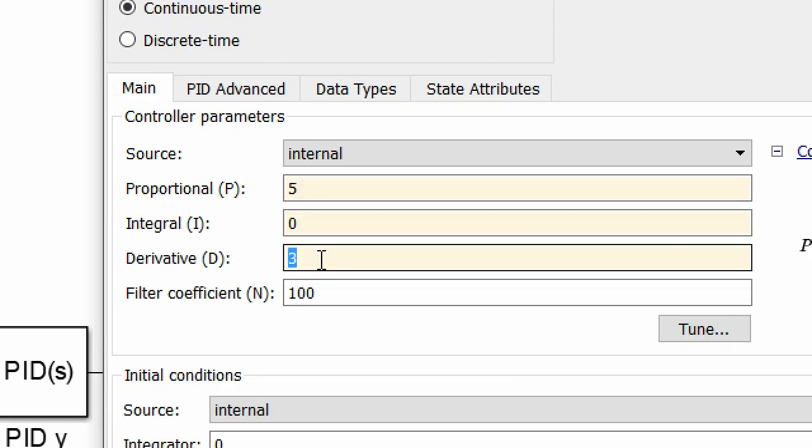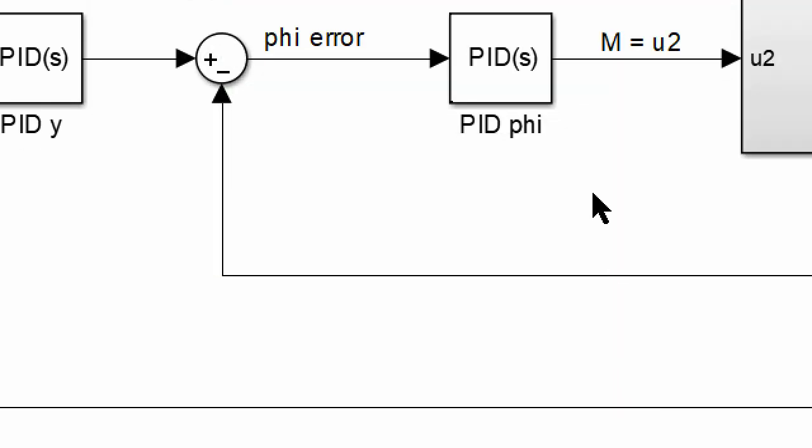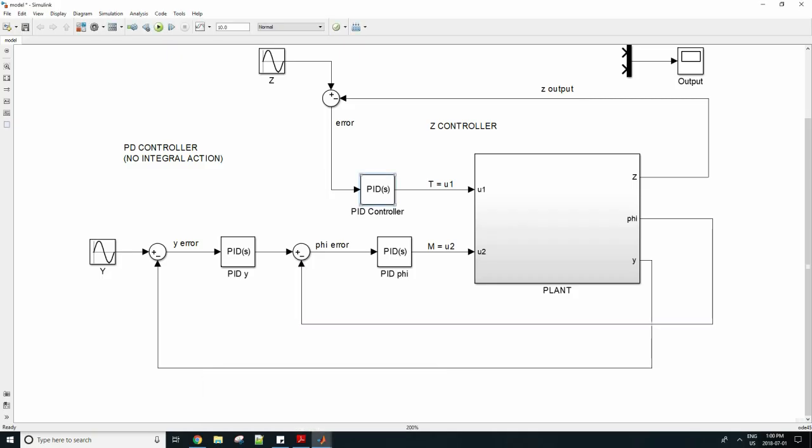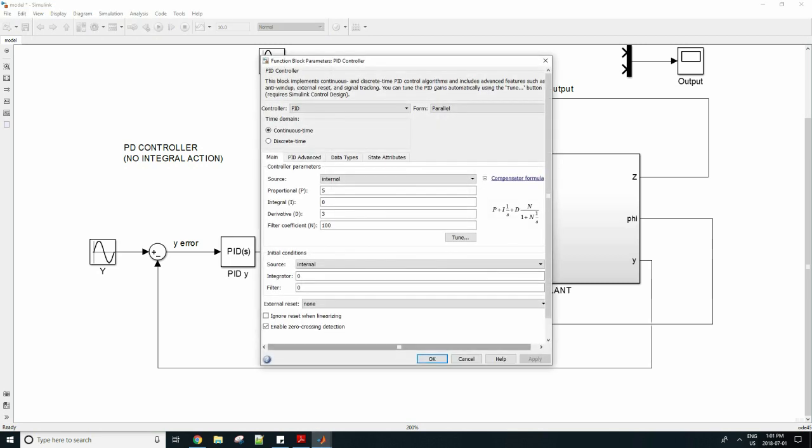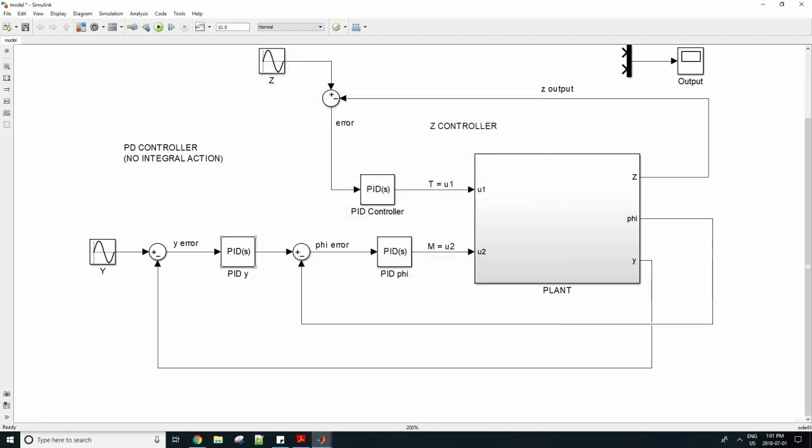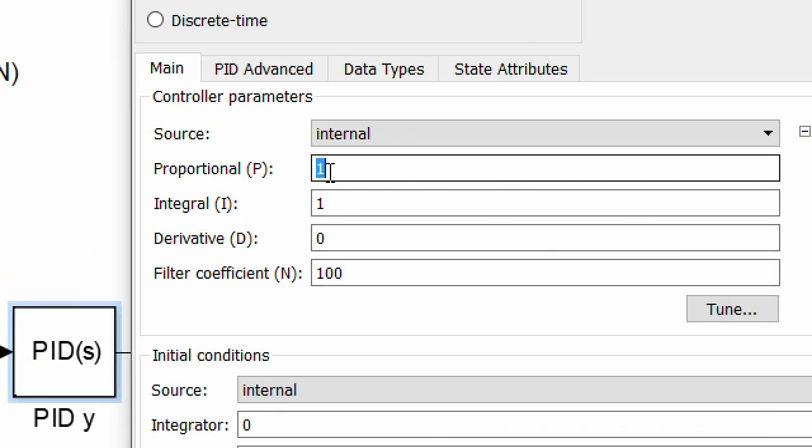For the phi loop, we can then simply set the KP and KD. So let's do y after. For y set the KP as shown here to 0.2 and then the KD to 10.